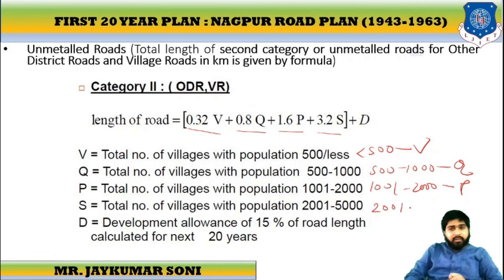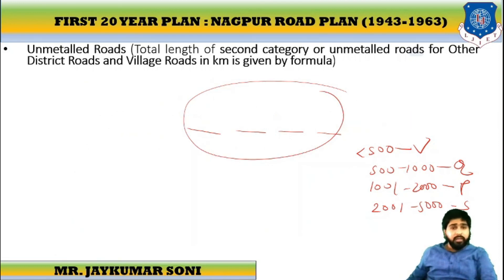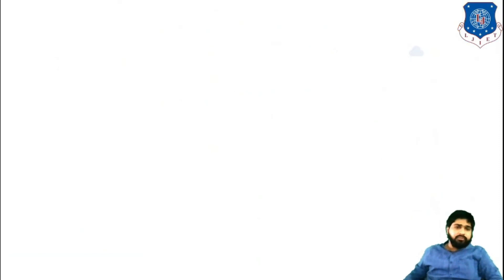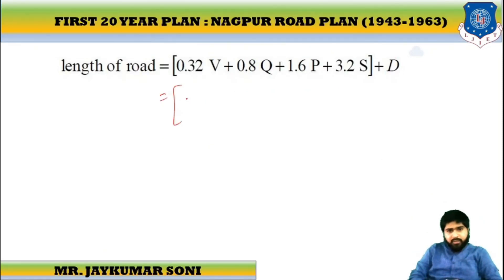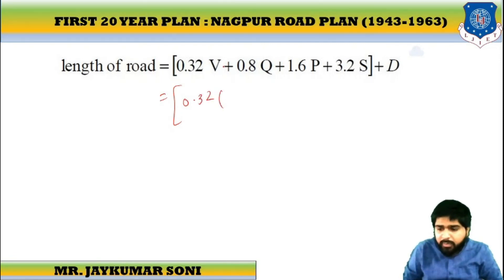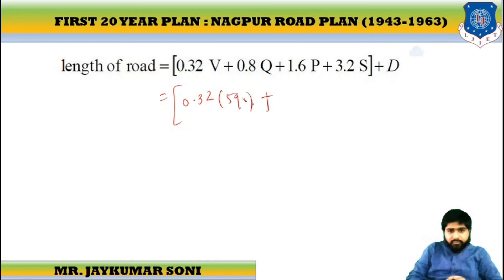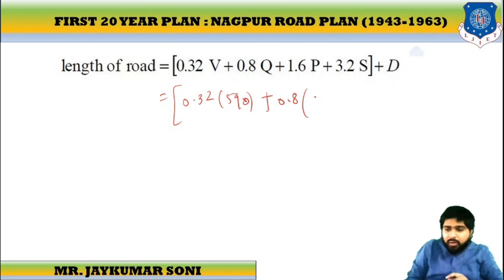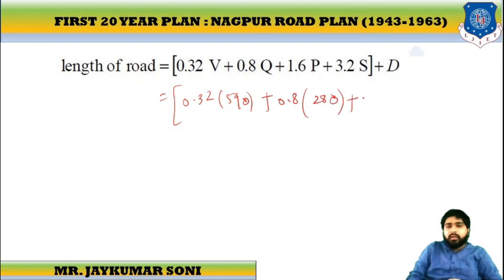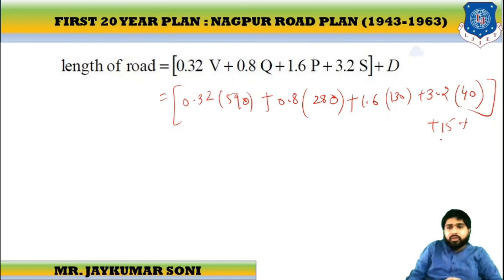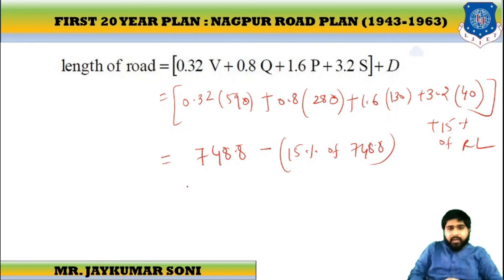S stands for those towns with population between 2,000 and 5,000. D is 15% of the total. R is not used for unmetal road. Putting in the values: 0.32B + 0.8Q + 1.6P + S, with Q given as the count. T is 130 and S is 14. The subtotal comes to 748.8. After subtracting 15% of 748.8, the total unmetal road length is approximately 851.1 km.